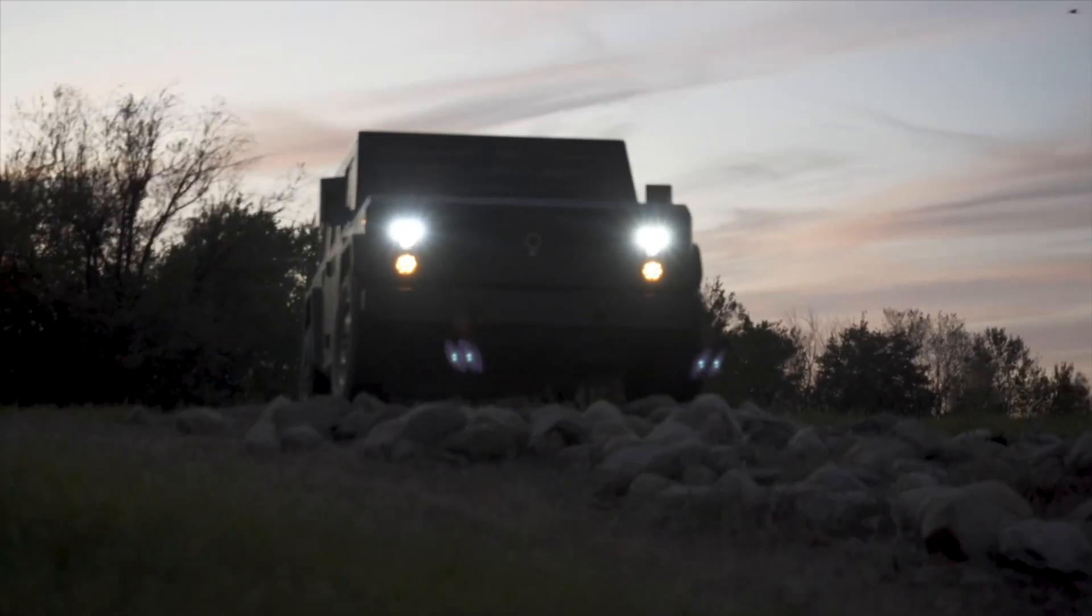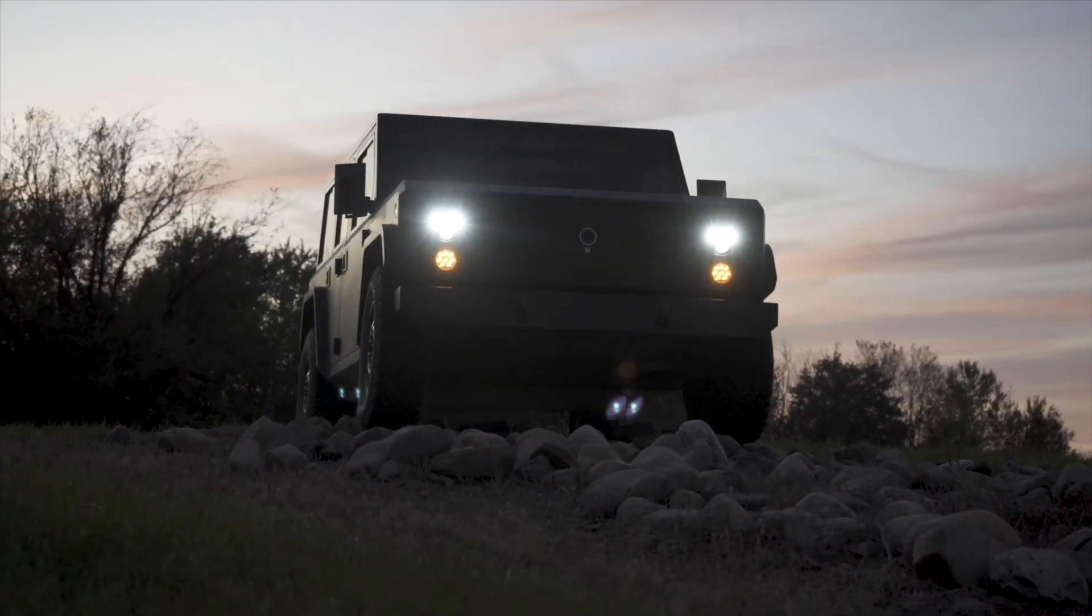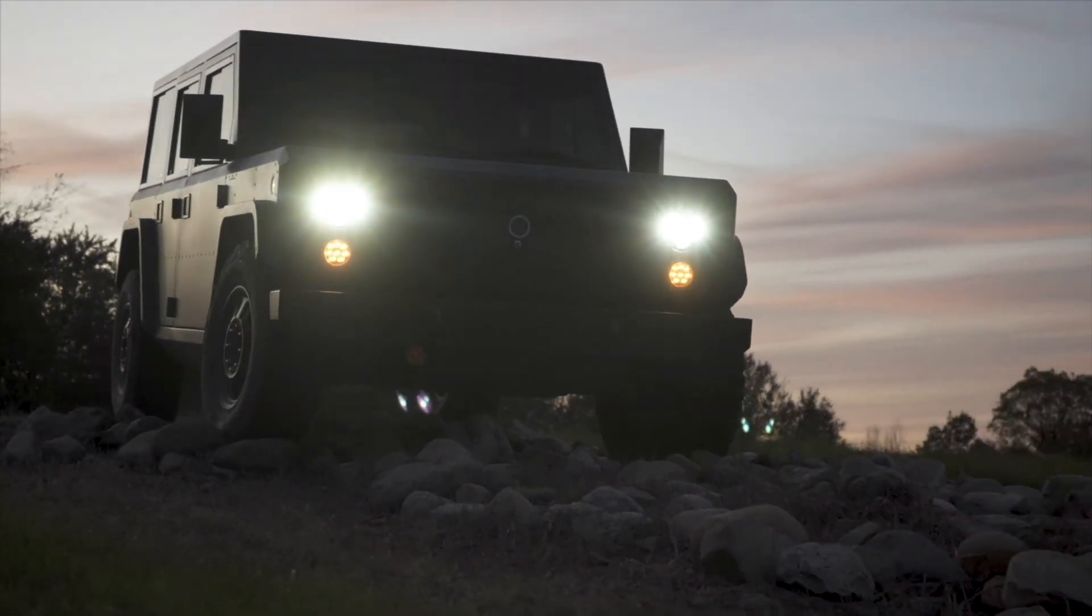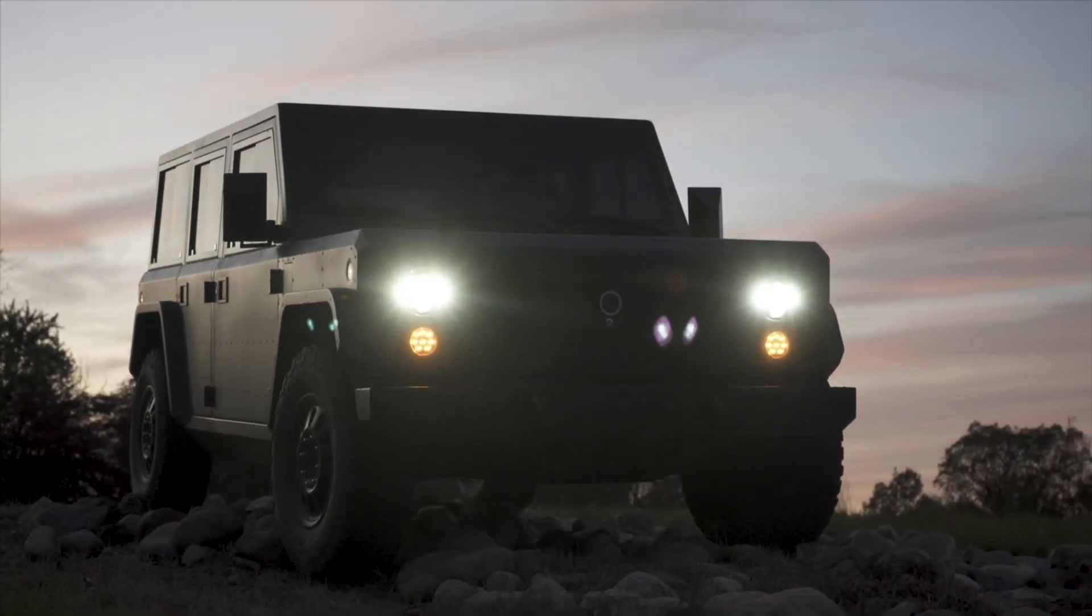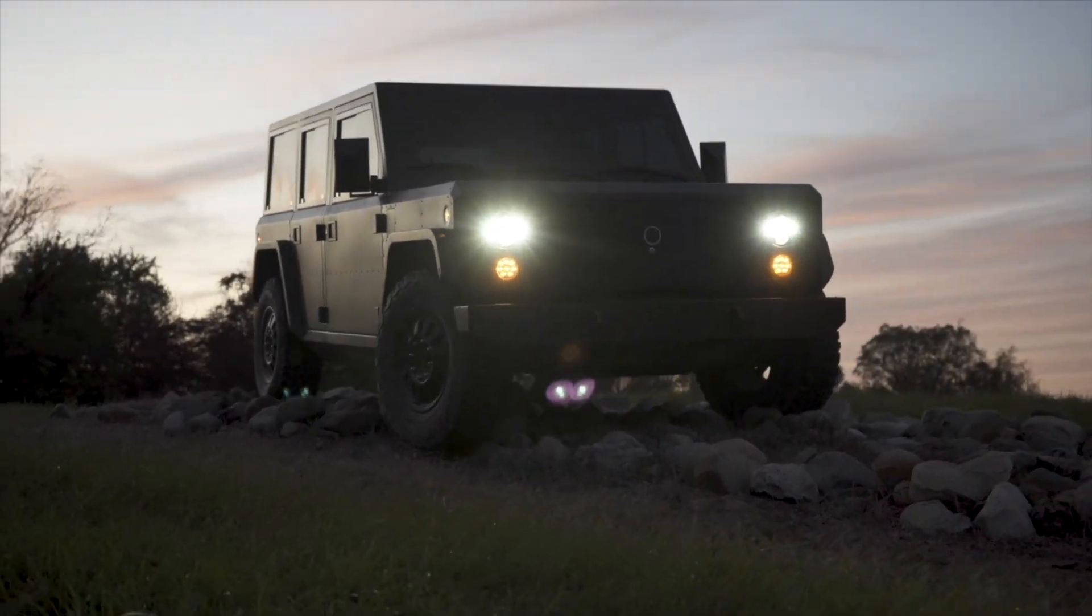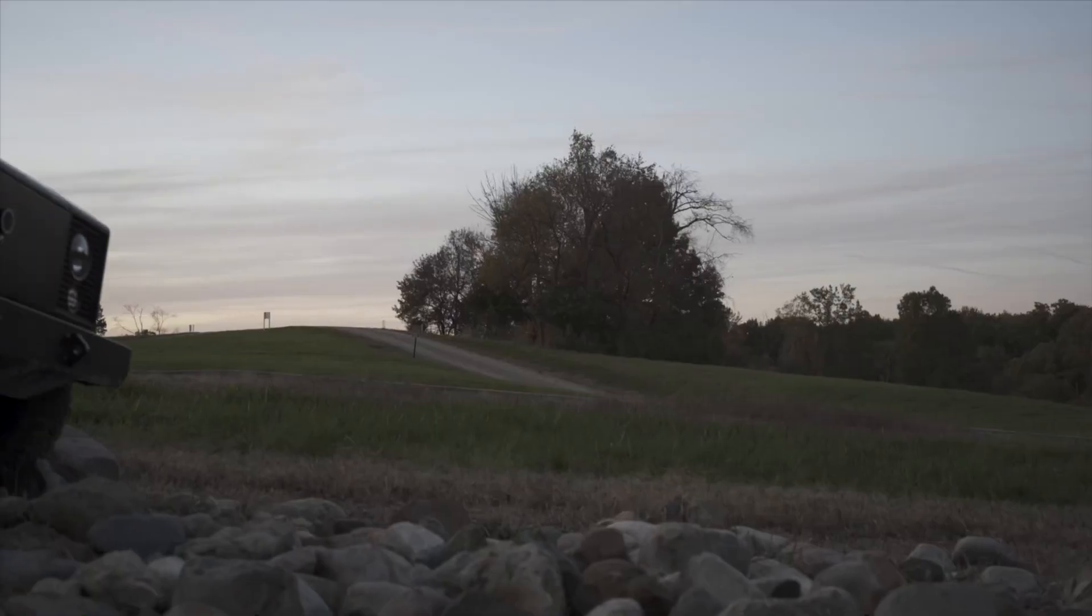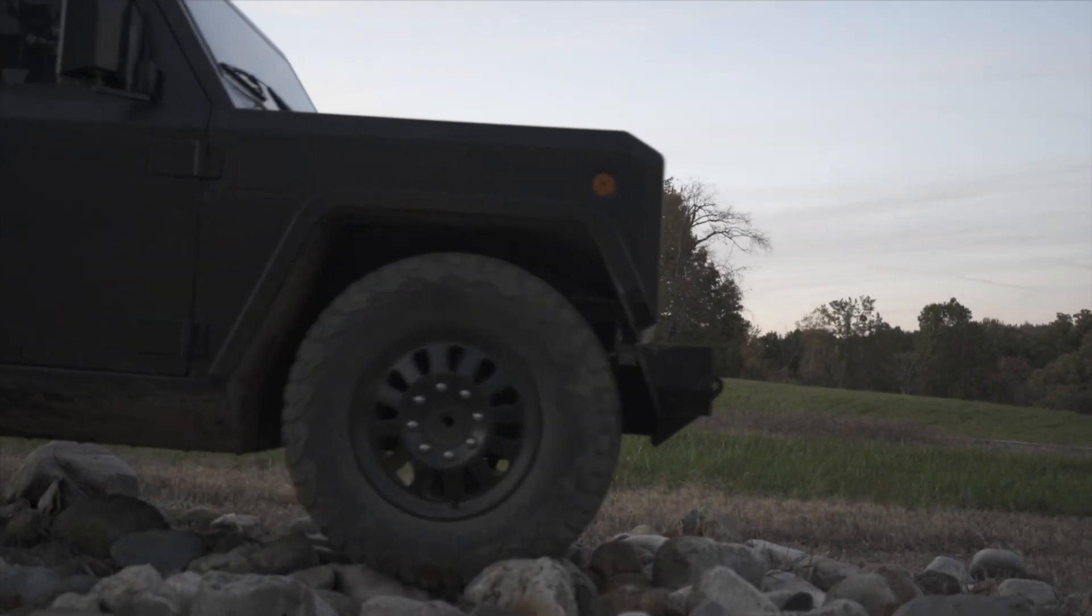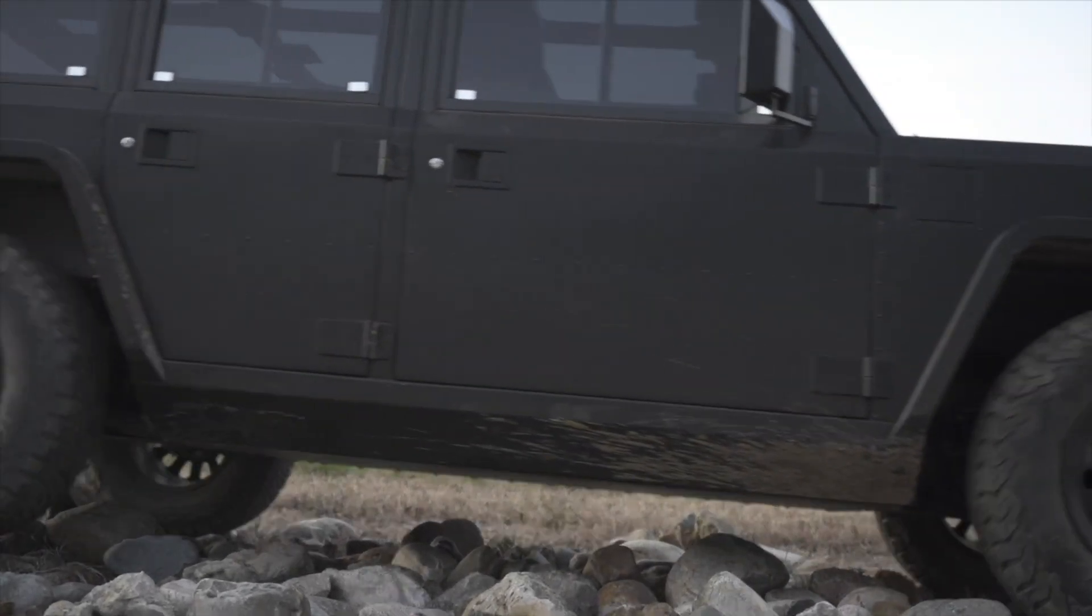In terms of specification, Bollinger is quoting all-wheel drive and all-terrain capabilities thanks to those portal gear hubs as standard as well as five thousand pounds of payload capability. In addition, the B2 chassis cab will feature the same stuff that the regular B1 and B2 have, such as self-leveling hydro-pneumatic suspension, ten kilowatt onboard AC charger and DC quick charging capability.